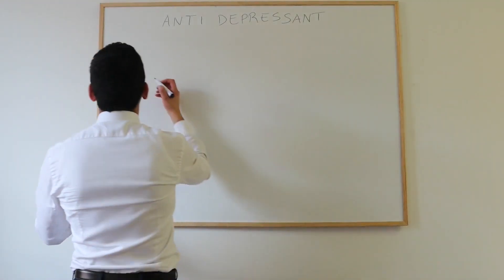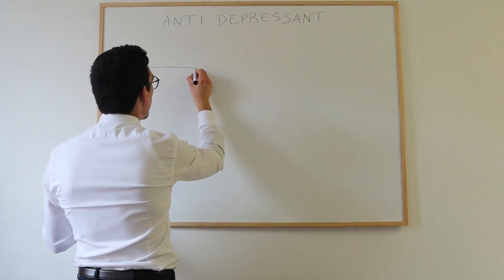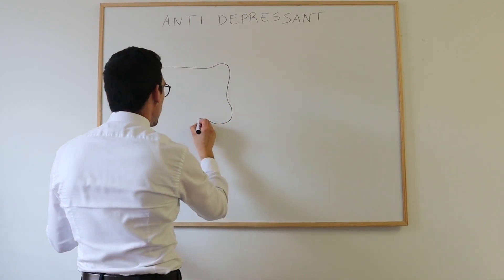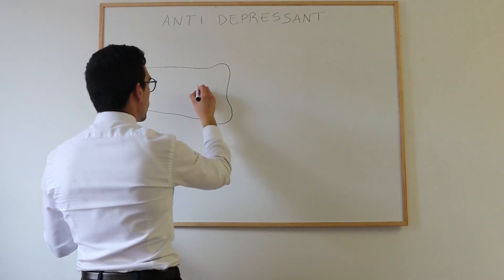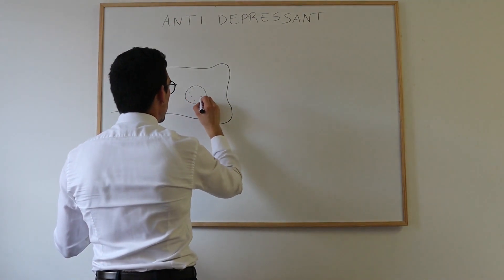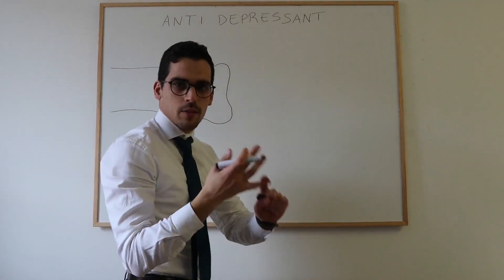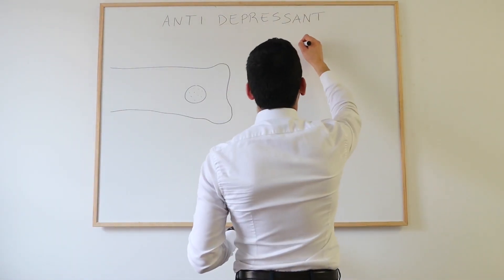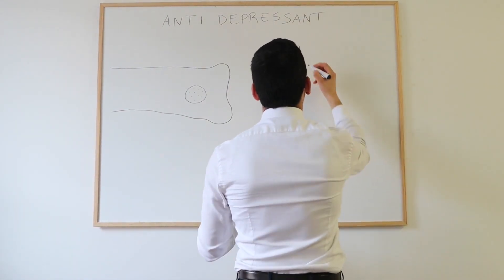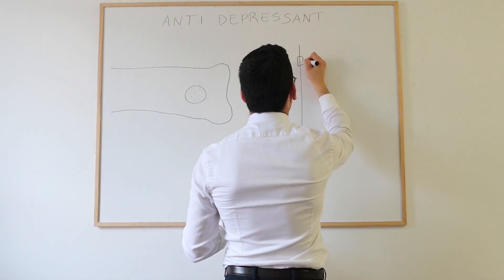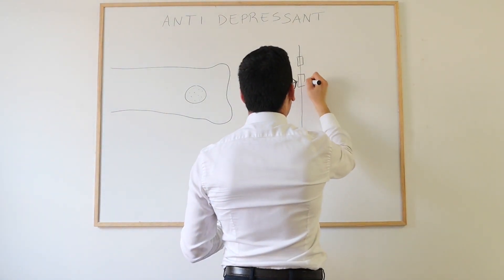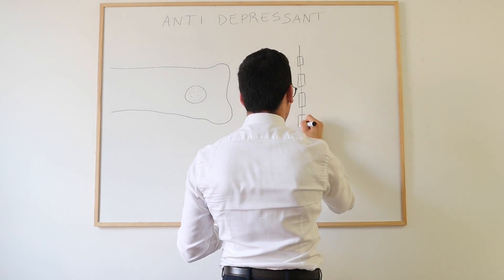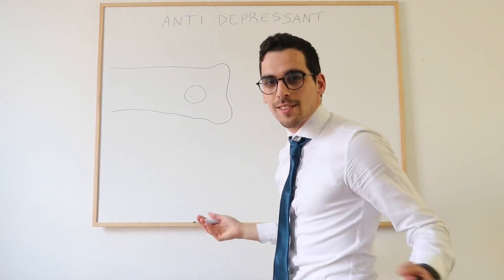Let's design our neuron that will release neurotransmitters — whether serotonin, noradrenaline, or dopamine — and then they will act on an effector, acting on particular receptors.